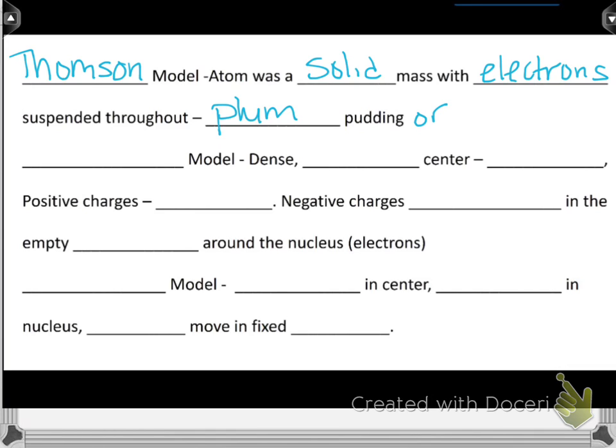Or something that might be more familiar to you would be like a blueberry muffin. So, make sure you add blueberry muffin. You can see the muffin and then you can see the blueberries throughout would be like the electrons. And that's kind of what his model looked like and what he thought an atom looked like.